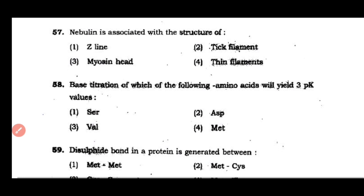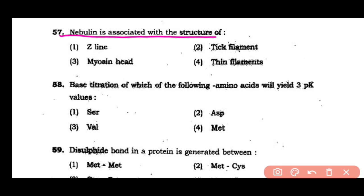Question number 57: Nebulin is associated with the structure of Z-line, thick filament, myosin head, or thin filament. The correct answer is option 4 — nebulin is a filamentous protein that provides actin filament stability and is mostly associated with the thin filament.